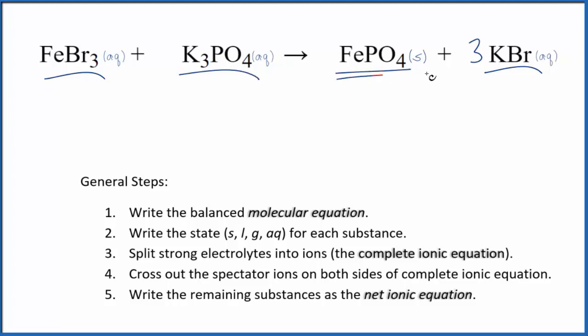but iron 3 phosphate, that's a solid, and that means it's going to be insoluble. It's going to be a precipitate, fall to the bottom of the test tube when these two substances react. So we have the states.